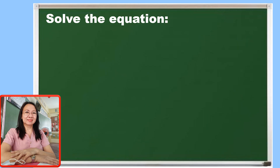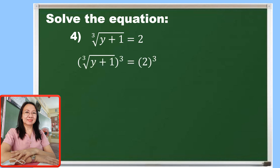Let me give you a higher index radical. For number 4, our given is the cube root of y plus 1 is equal to 2. Now, since the given index is 3, we're going to raise both sides to exponent 3. The cube root of y plus 1 cubed is equal to 2 cubed. Simplifying this will result in y plus 1 is equal to 8. Let us apply the addition property of equality by adding negative 1 on both sides, so that 1 minus 1 is 0, giving us y is equal to 7.